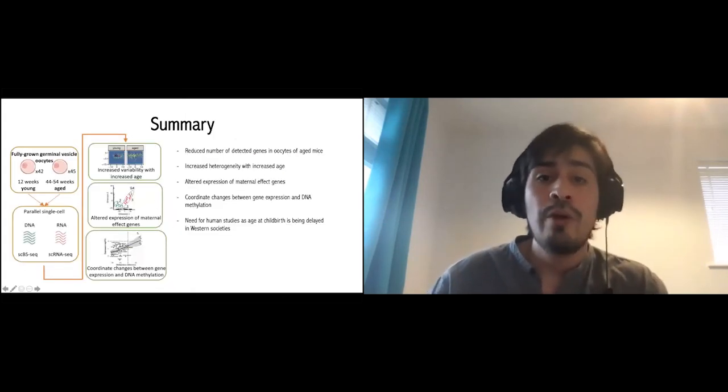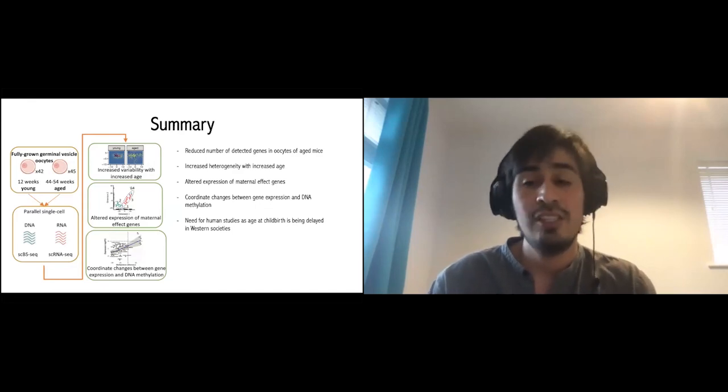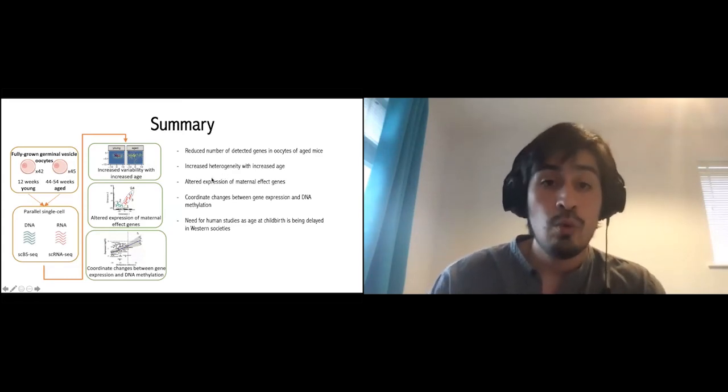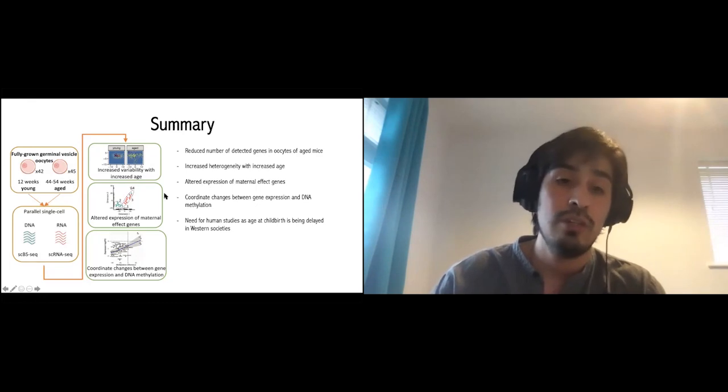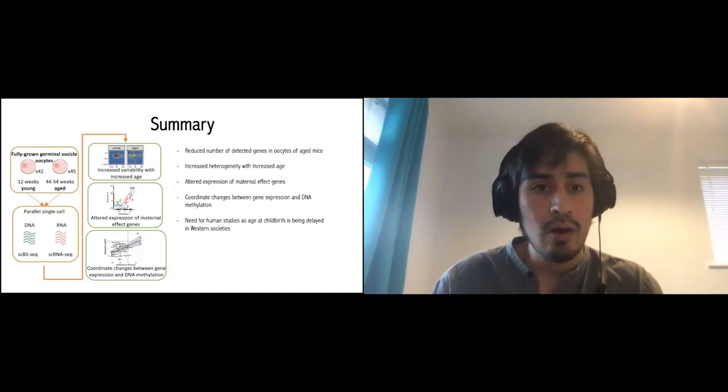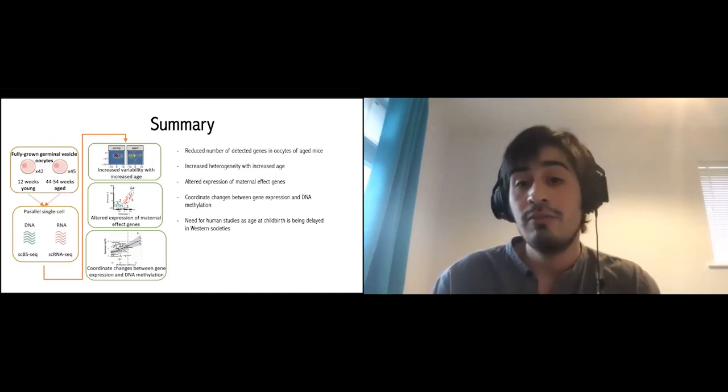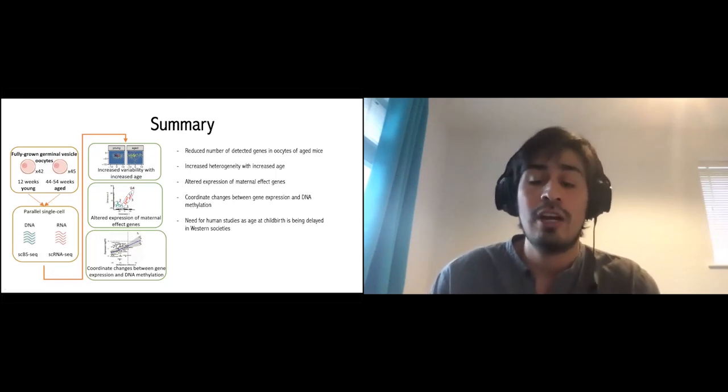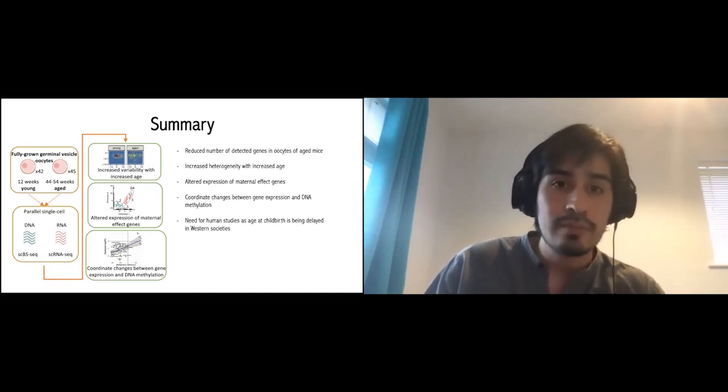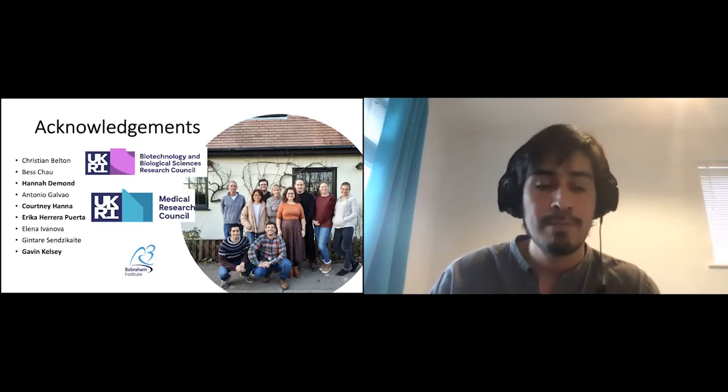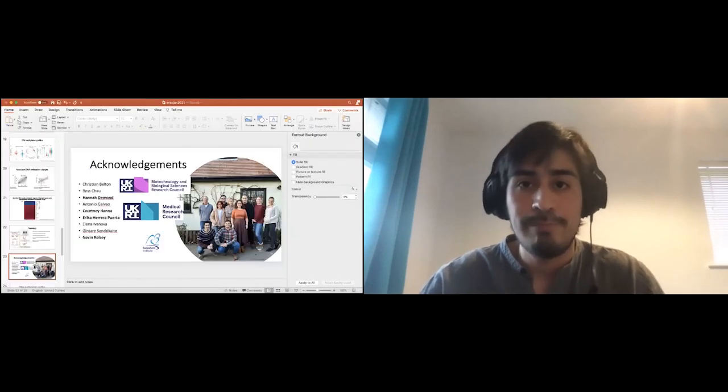So in summary, we were able to observe that there's a reduced number of detected genes in oocytes from aged mice, and there's also an increased heterogeneity with increased age. We were able to observe altered expression of maternal effect genes, which is important because they can have an impact on the development of the embryo. We also observed coordinate changes between gene expression and the DNA methylation. Of course, this is looking at mice, there's a need for human studies and this becomes more relevant now in society as the age of childbirth is being delayed more and more. Lastly, I just want to thank all the people in the lab and especially the people that contributed to this study in particular, and I'm happy to take any questions.